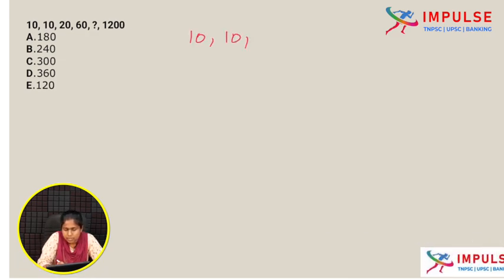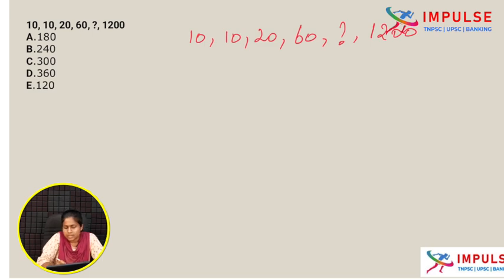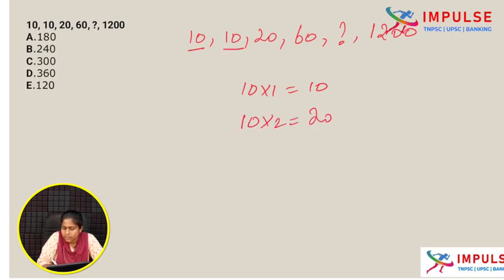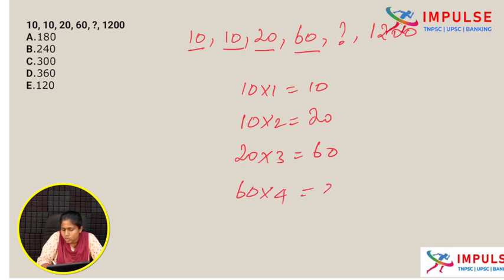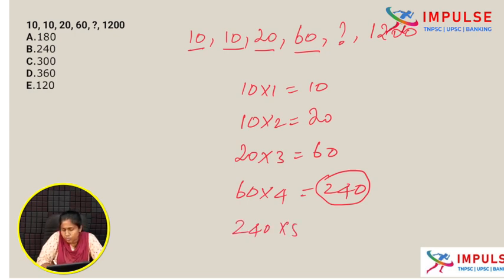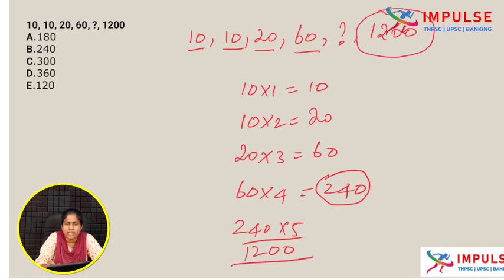Next question: 10, 10, 20, 60, ?, 1200. The logic is multiplication by increasing numbers: 10 × 1 = 10, 10 × 2 = 20, 20 × 3 = 60, 60 × 4 = 240, 240 × 5 = 1200. So the missing number is 240. Option B.